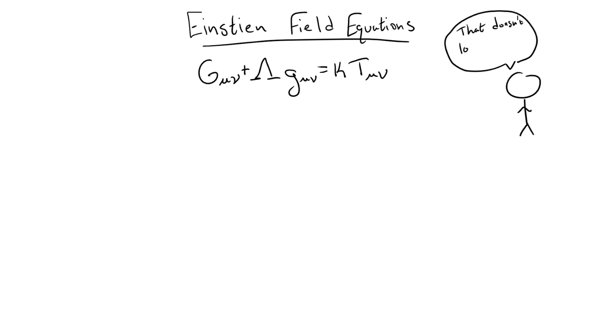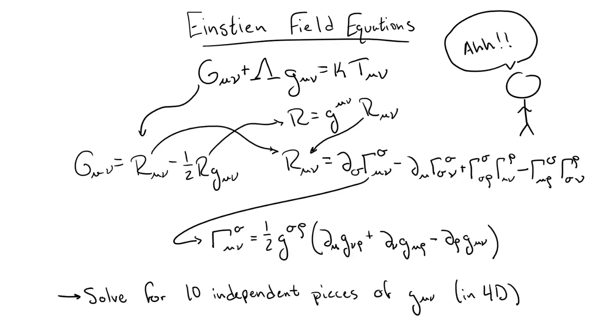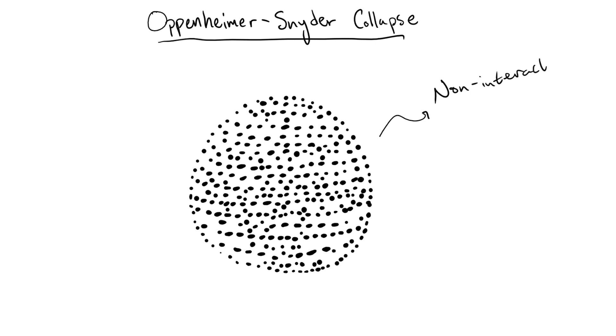This means that to even find a spacetime which is compatible with the laws of general relativity, one typically must make certain assumptions about the spacetime which greatly simplify the solving process. For example, the first solution which showed that a black hole could be formed from gravitational collapse was introduced by Oppenheimer and Snyder in 1939, but it only worked under the assumption that all of the collapsing particles did not interact, and they collapsed according to trajectories perfectly pointed towards the origin.